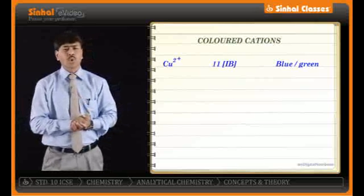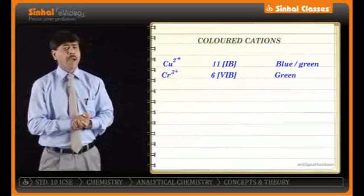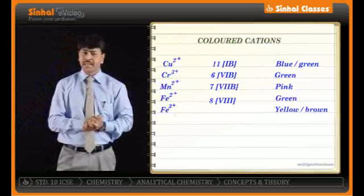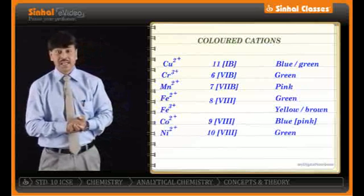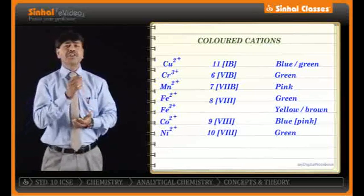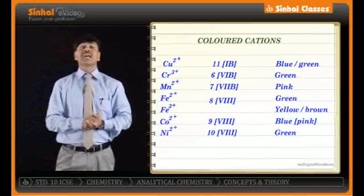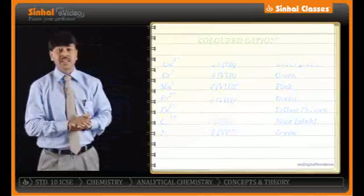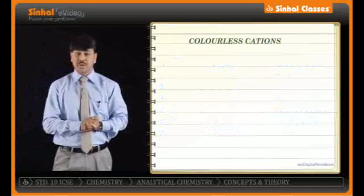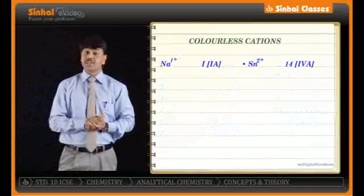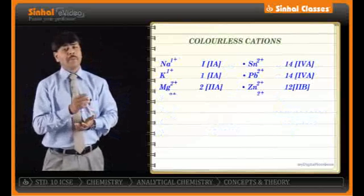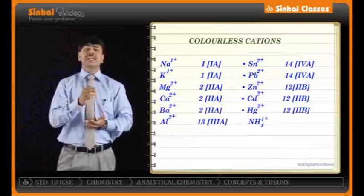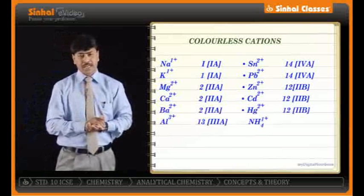Copper, chromium, manganese, ferrous, ferric, cobalt, and nickel generally form colored cations. Whereas sodium, potassium, magnesium, aluminium, barium, and calcium form colorless cations.